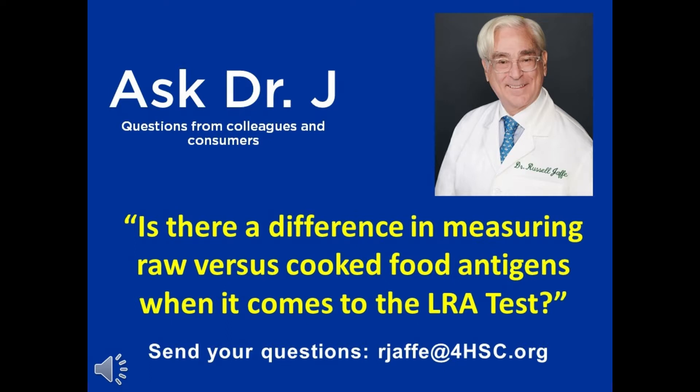I understand that this is a bit technical, but people do need to understand that when you cook a food, you change its antigenic structure randomly, not specifically. We found out very early on — this goes back to the early 80s — that you needed to get the soluble reactive antigens in a novel soluble buffer to extract them, then filter them so you get what you want and not what you don't.